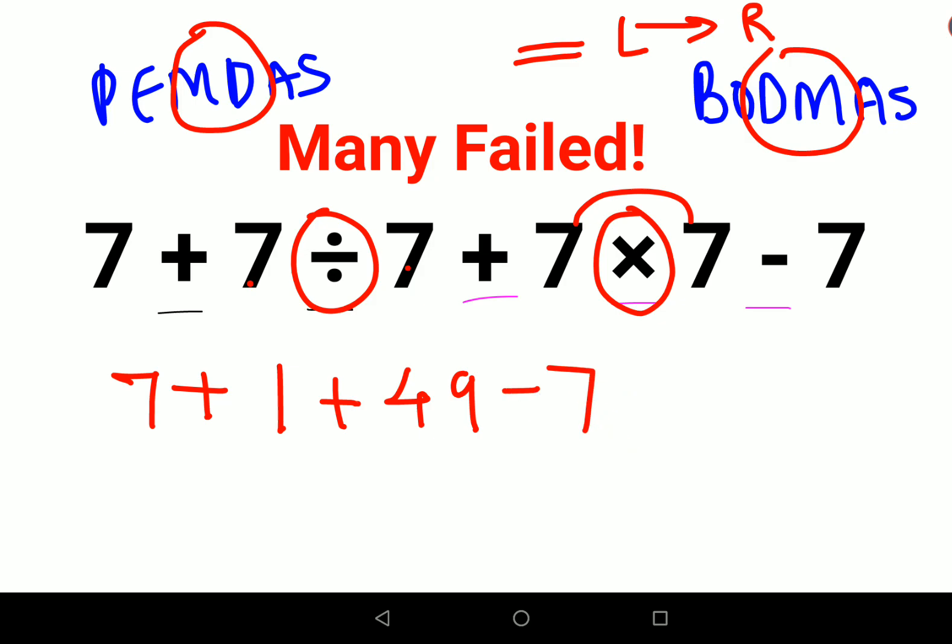Now all you have to do next is just add 7 plus 1 that gets you 8 plus 49 minus 7.